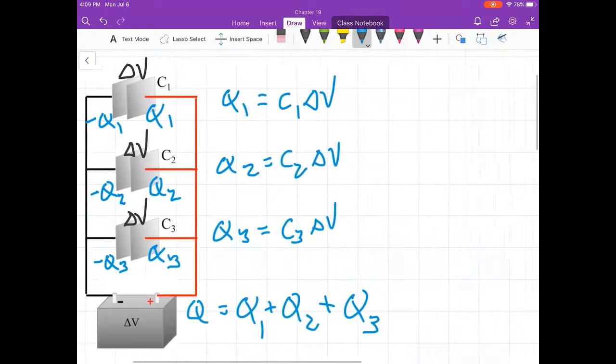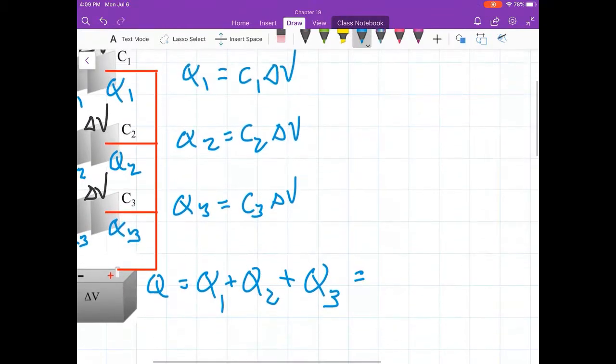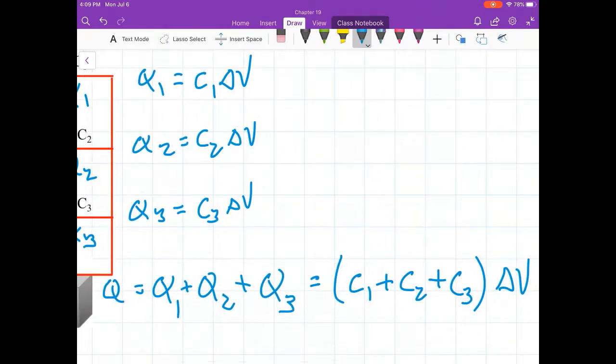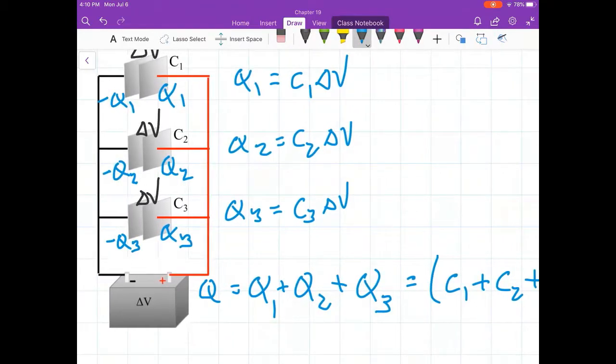So the total charge that left the battery, let's look at this. We have the same voltage each time. It's going to be C1 plus C2 plus C3 times delta V. We're just adding those three terms, C1 delta V plus C2 delta V plus C3 delta V. And we factor out the delta V. Delta V is the same for each one. That's the total charge that left that battery. Of course, the same amount returned to the other side of the battery. So the battery didn't gain or lose charge. It just pushed that much charge up one side and brought it to the other side.